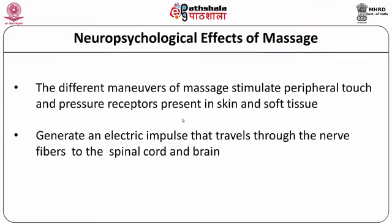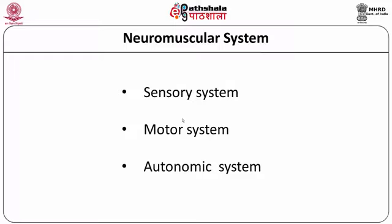Massage stimulates sensory receptors present in the skin. The different maneuvers of massage impart an array of sensory experience by stimulating peripheral touch and pressure receptors present in skin and soft tissue. This stimulation of sensory receptors generates an electric impulse. This electric impulse travels through the nerve fiber to the spinal cord and brain and produces a variety of effects on the sensory, motor and autonomic nervous system. The nervous system is composed of three components: motor system, sensory system, and autonomic system. The sensory system consists of different sensory receptors and sensory nerve fibers. The function of the sensory receptor is to collect information about the various activities going on in the body and convey it to the brain through sensory nerve fibers.